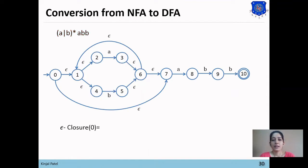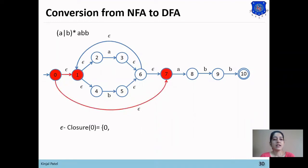For that, our first step is to find the null closure of the starting state, which is state 0. To find the null closure of 0, first state 0 itself is included. Then we check if 0 has null transitions — and it does: from 0 to 1 and from 0 to 7. So states 1 and 7 will be included in the set.